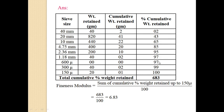Now we have to total the cumulative percentage weight retained. That is addition of all we get 683. So we know the formula of fineness modulus, that is sum of cumulative percentage weight retained up to 150 micron divided by 100. So put the value 683 divided by 100 we get the fineness modulus of 6.83.